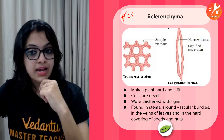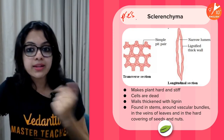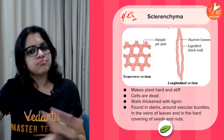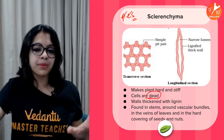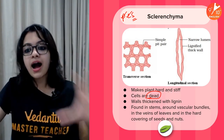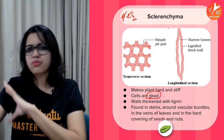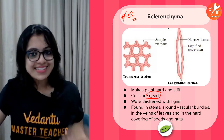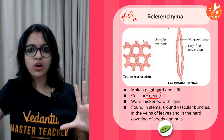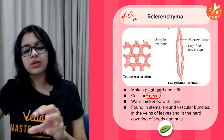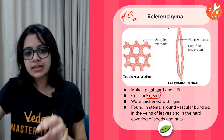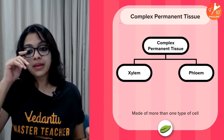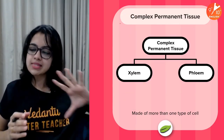Now S in PCS — sclerenchyma. Sclerenchyma is made up of dead cells, which is very important to remember. It makes plants hard and stiff and provides a lot of mechanical support. To summarize: parenchyma has thin walls, collenchyma is unevenly thickened, and sclerenchyma is highly thickened.